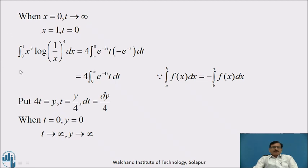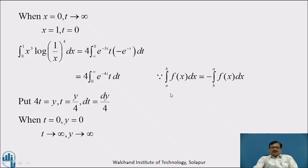Therefore, the given integral can be written as 4 into integration from infinity to 0 of e raised to minus 3t into t into minus e raised to minus t dt, which equals 4 into integration from 0 to infinity of e raised to minus 4t — that is, e raised to minus 3t into e raised to minus t — into t dt. Here we use the fundamental theorem of definite integrals: integration from a to b of f dx equals minus integration from b to a of f dx. Changing upper and lower limits changes the sign of the integral.